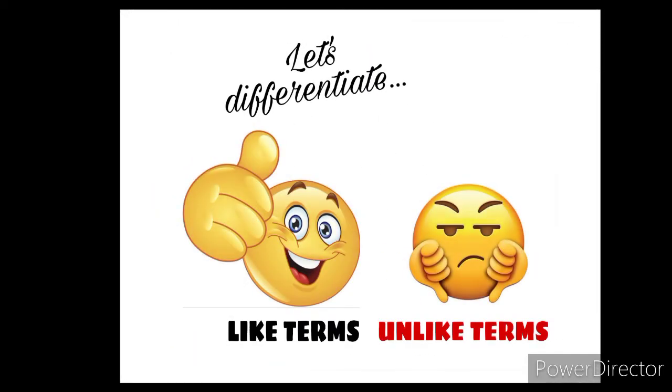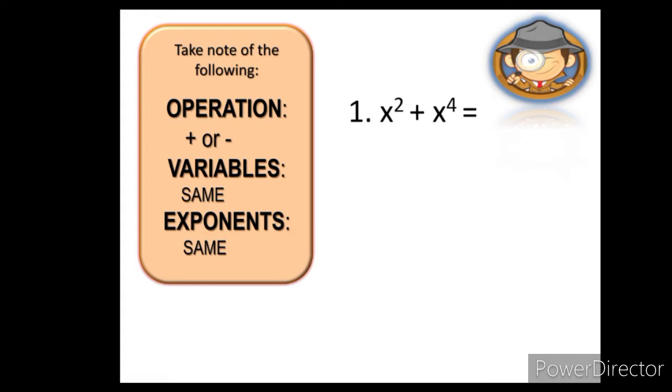I will show you examples and tell me whether they are like terms or unlike terms. All you have to do is to thumbs up for like terms and thumbs down for unlike terms. Number 1. They are unlike terms because the exponents are not the same. Number 2. Again, they are unlike terms because the variables are not the same. Number 3. They are like terms. The operation is addition, the variables are both x, and their exponents are both 3 or cube.